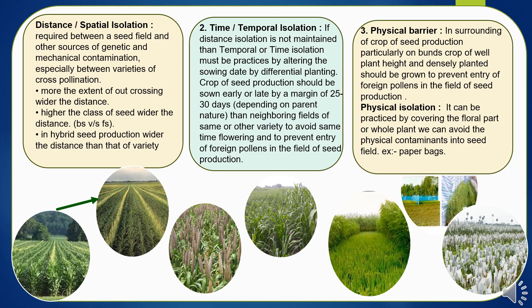Spatial or distance isolation is the spatial separation required between a seed field and other sources of genetic and mechanical contamination, especially between varieties of cross-pollinated crops. The greater the extent of outcrossing expected, the wider the distance should be. Higher classes of seed — such as breeder, foundation, and nucleus seed — require wider distances compared to hybrid seed production, which in turn requires wider distance than variety production.